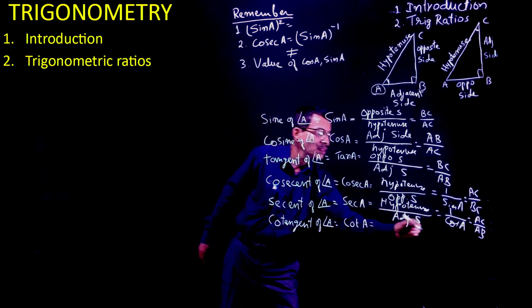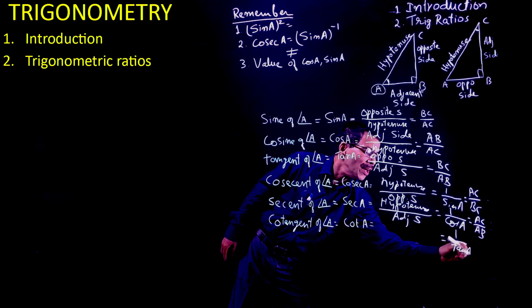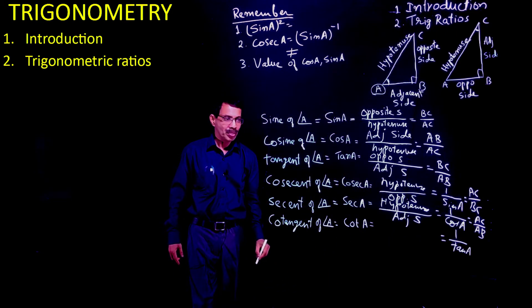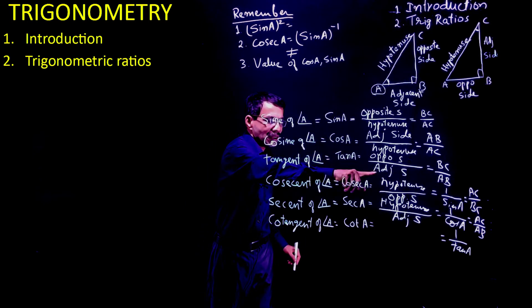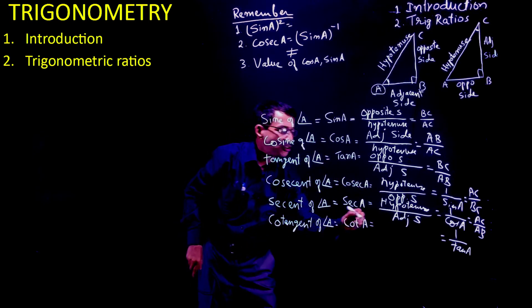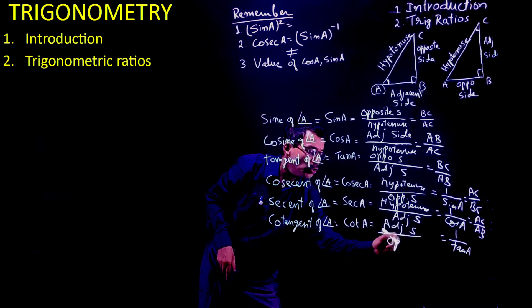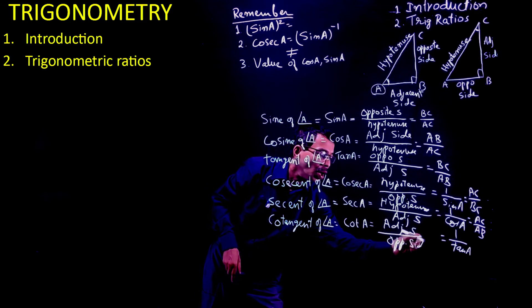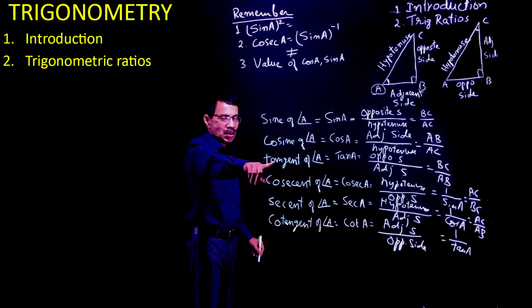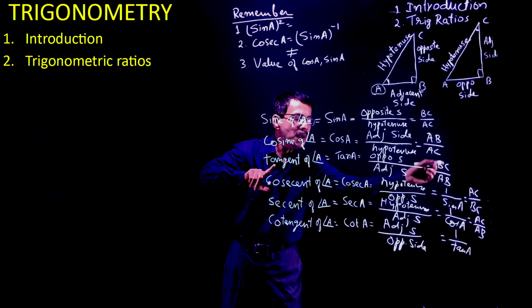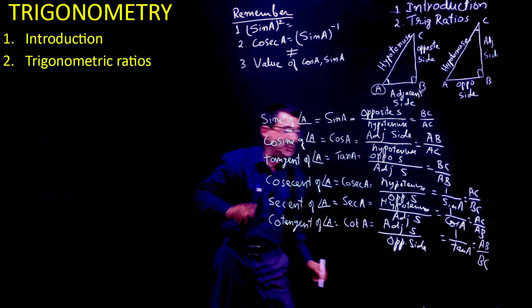And cot A is the inverse of tan A. Tan A was opposite upon adjacent, so cot A is adjacent upon opposite side. Therefore cot A equals AB upon BC.